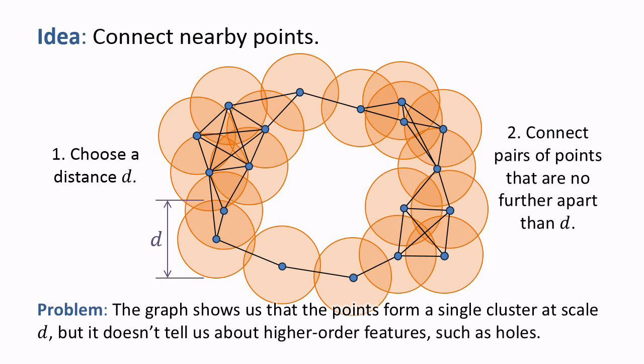The graph shows us that the points form a single cluster at scale parameter d, but it doesn't tell us about higher-order features such as holes. For example, this graph has many cycles, but the graph doesn't help us identify the central hole in the data.